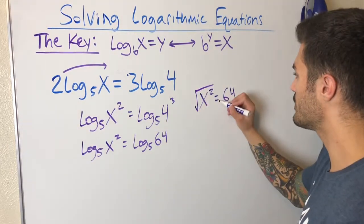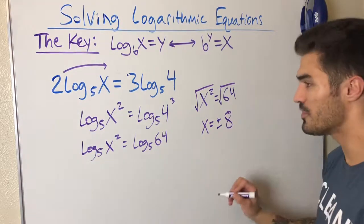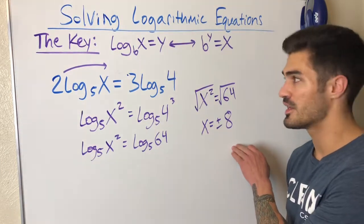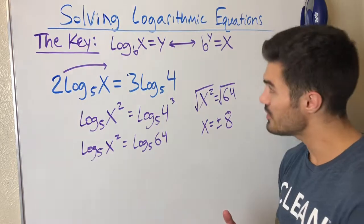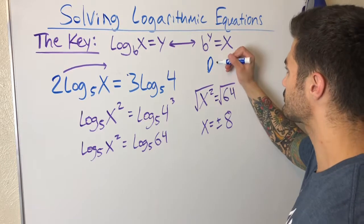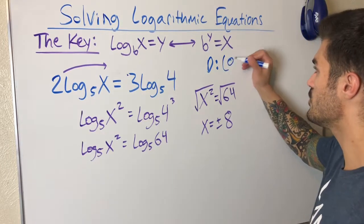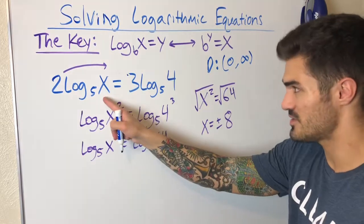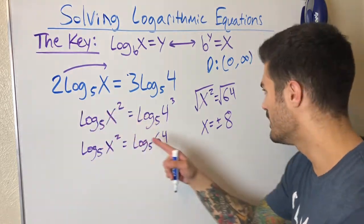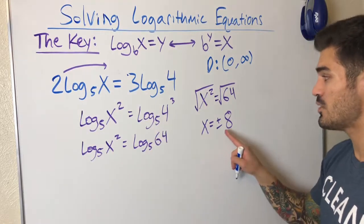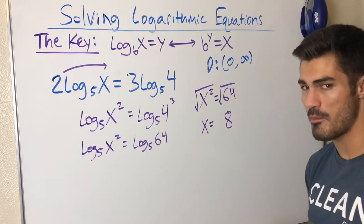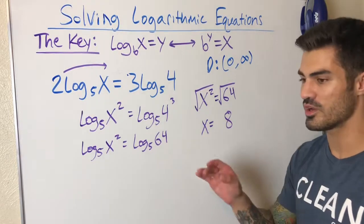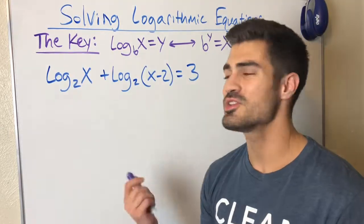Taking the square root of both sides — don't forget the plus or minus — gives x = ±8. But we have to consider the domain of a logarithmic function, which is (0, ∞). I need to plug both values back in. Negative eight does not work in the logarithm, so I cross it out. The solution is x = 8. It's good practice to always check your answers in the original logarithmic equation.